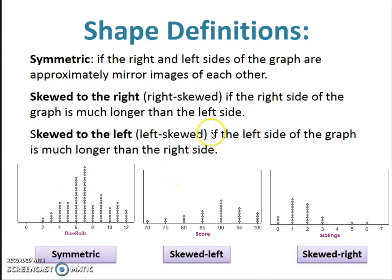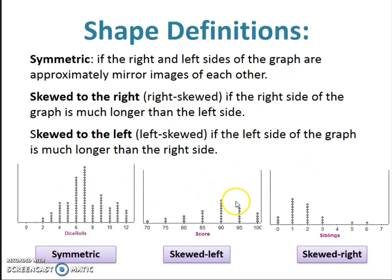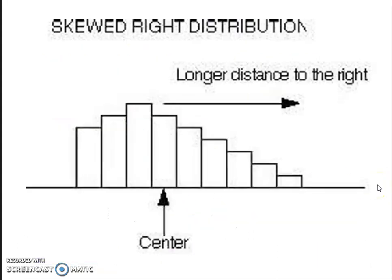Skewed to the right versus skewed to the left refers to which side of the graph is longer. If it's skewed right, the right side of the graph is longer than the left side — it kind of extends out more. And this graph down in the middle is called skewed to the left. This is what these definitions look like in terms of a dot plot. The next slide shows a skewed right distribution looking at a histogram — longer to the right, so this would be skewed right.